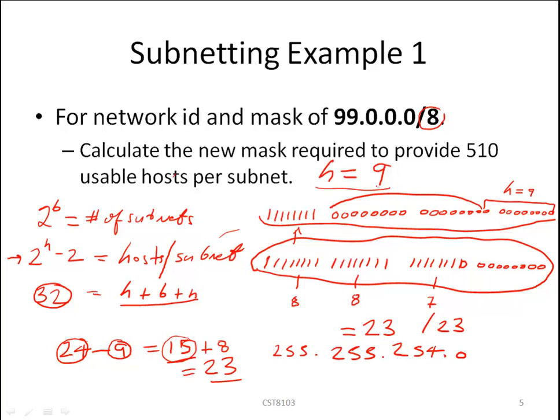Looking at our new mask again. We have here this represents our B value. B, the number of bits we've transformed from host to network, is equal to 15. We will need this for our next question. So the number of borrowed bits or the number of original host bits transformed into network bits is 15.